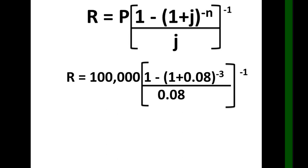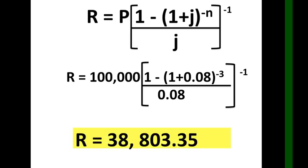Don't forget the raise to negative 1 — it's very important. That gives approximately 0.388-something. Multiply your answer by 100,000 pesos, and therefore the answer is 38,803.35, rounded to the nearest hundreds. This means Paulo will pay 38,803.35 every year, which already includes the 8% interest, for 3 years on his 100,000 loan.